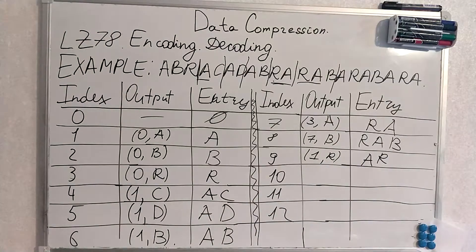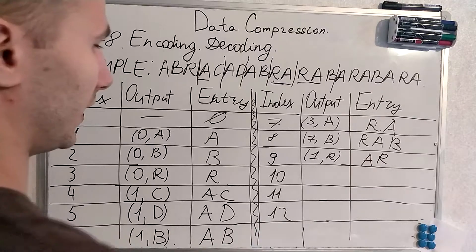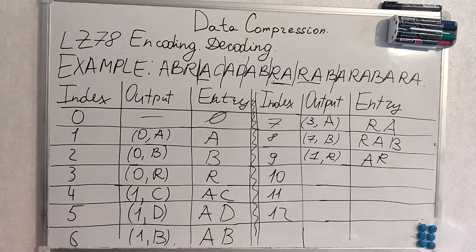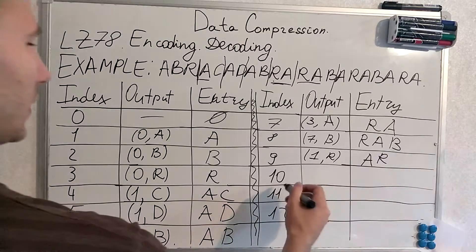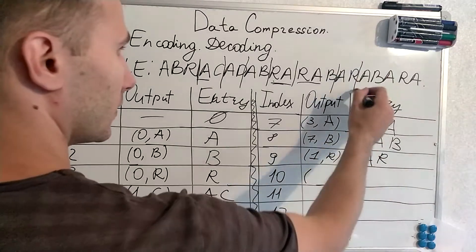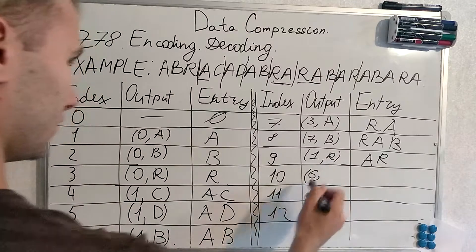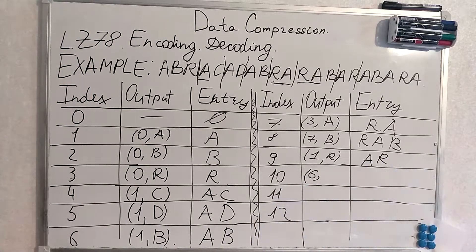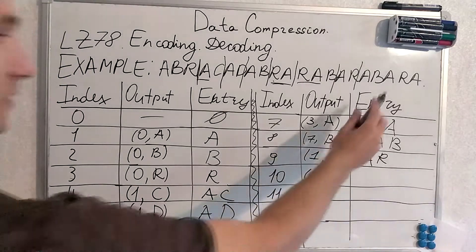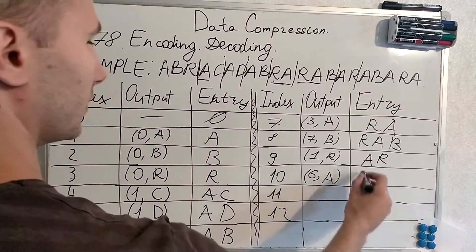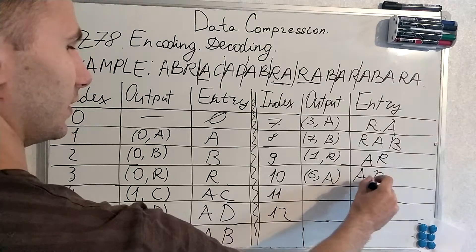I think you understand the logic and the whole pattern is clear, but we will continue to the end. I highly recommend you to continue from this point on your own and compare our results. We are here: 'ab' is encoded at index 6. Next symbol is 'a', giving us new entry 'aba'.